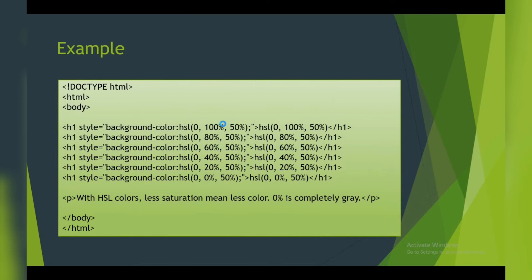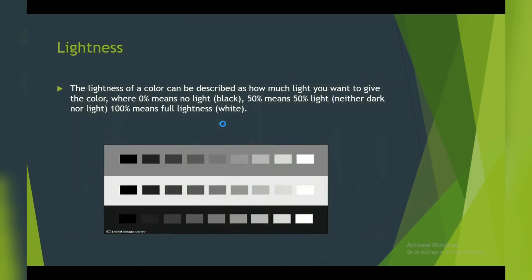Next, more detail about lightness. Lightness of a color can be described as how much light you want to give to the color. Zero percent means no light; the result will be complete black. 50 percent means 50 percent light; the result will be neither dark nor light. 100 percent means full lightness; the result will be complete white.